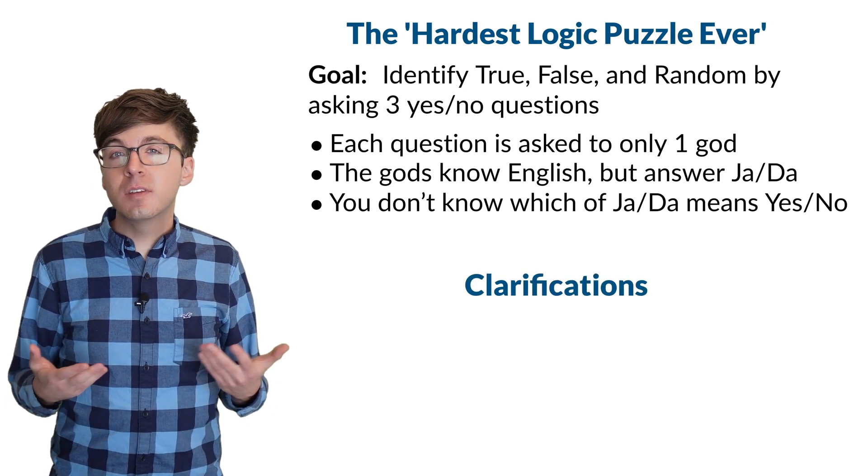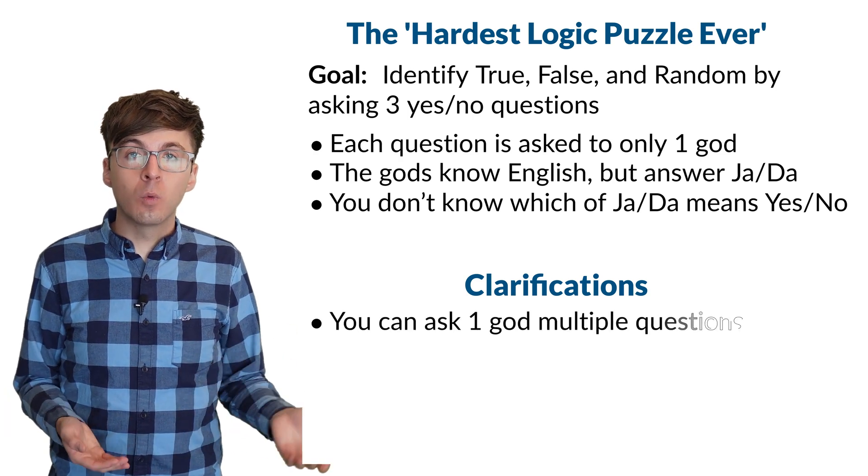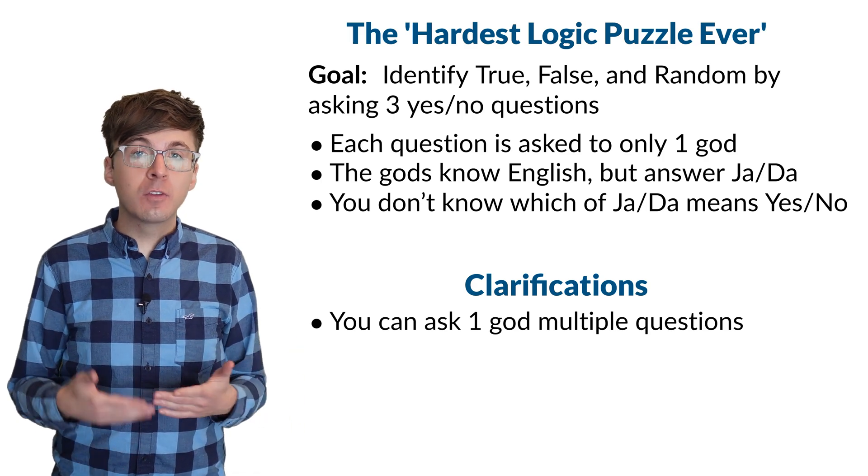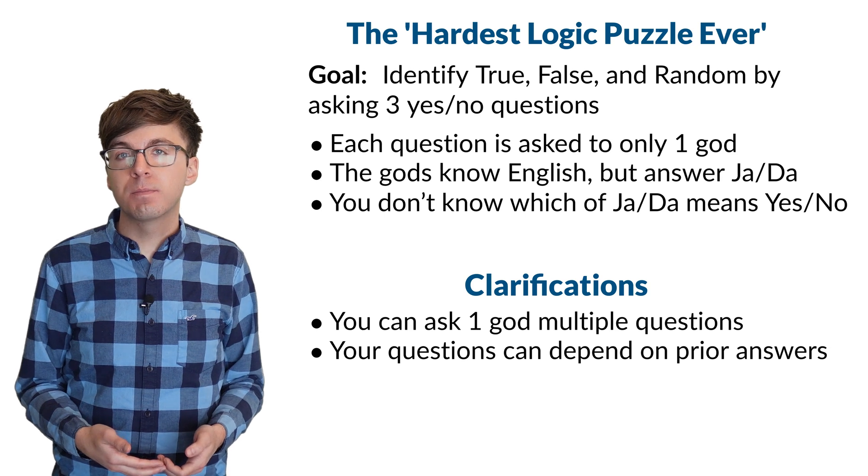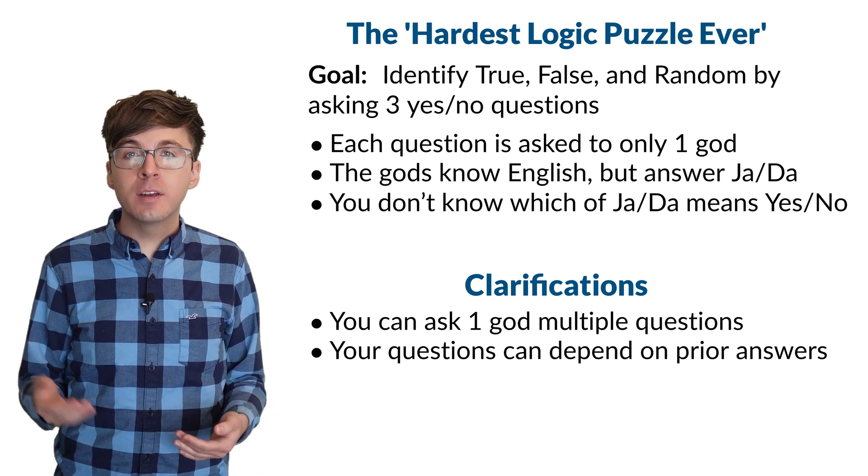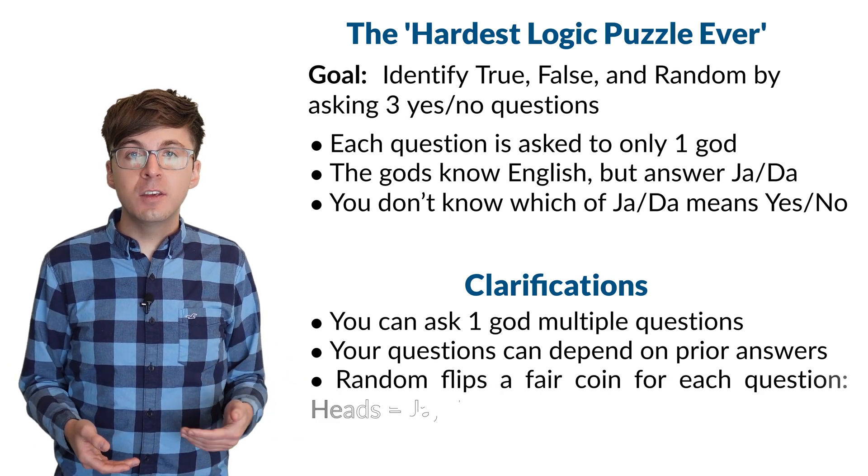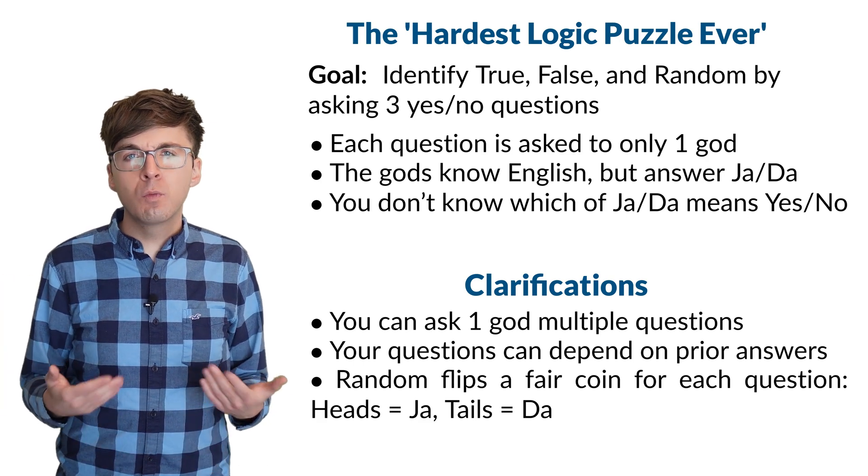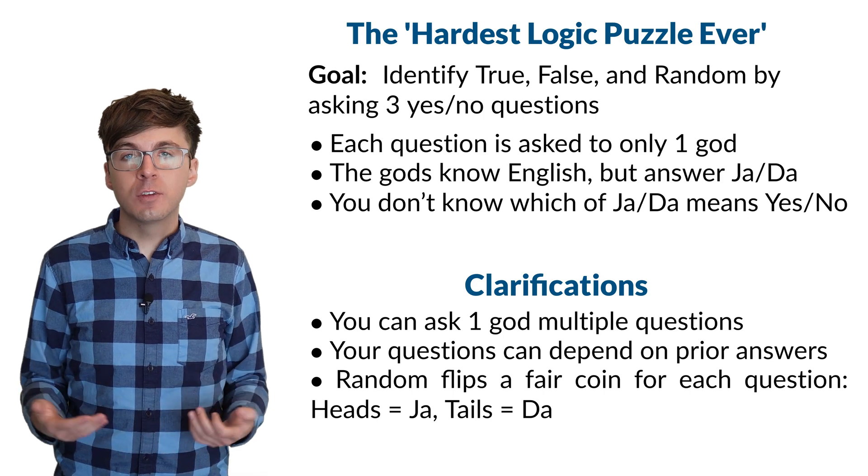Here are a few clarifications given by Boulos. You can ask the same god more than one question if you want. Your second and third questions, and to whom you ask them, can depend on the answers to the previous questions. Lastly, random flips a fair coin in his mind before answering each question. If heads, he will say ya, and if tails, he will say da. So random always answers da or ya to a yes or no question, just like the others.